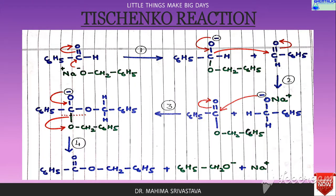In the oxidation of aldehydes and ketones, the first name reaction we have is the Tischenko reaction. In this reaction, aldehydes react with aluminium ethoxide or sodium alkoxide and give an ester. Let's look into the mechanism of the reaction.